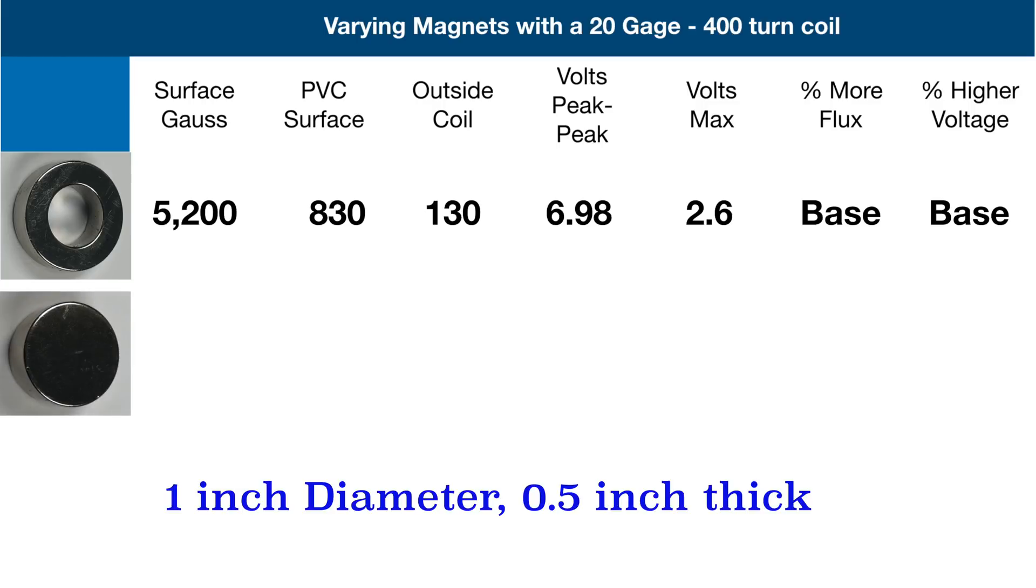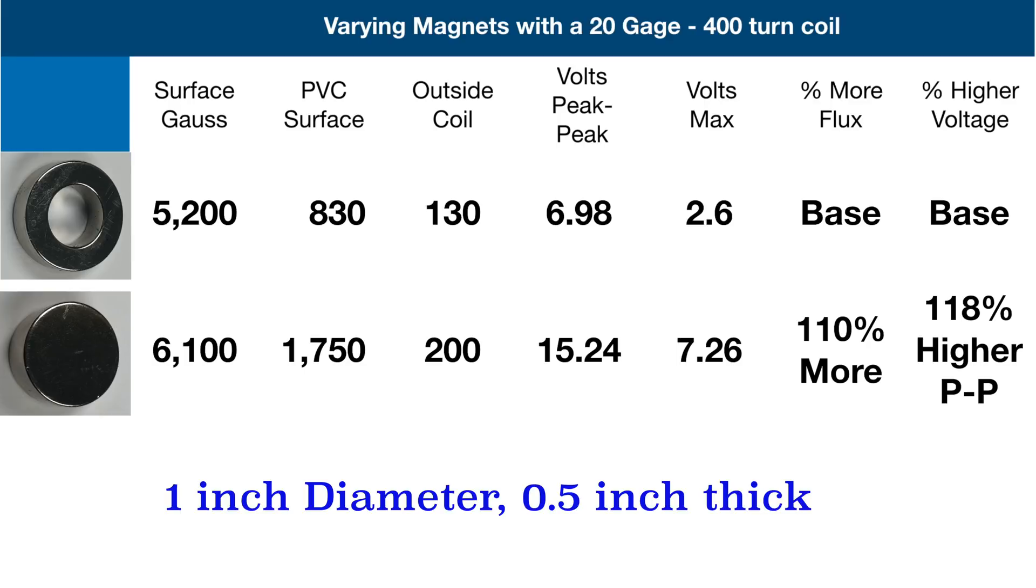Next we looked at the one inch diameter, half inch thick N50 disc magnet, and we had 1750 gauss on the outside of the PVC pipe, the inside of the coil, and it produced 15.24 volts peak to peak.